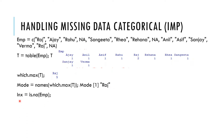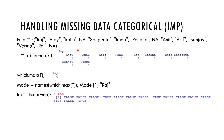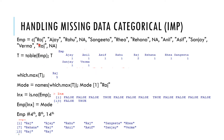We find the indices of missing values using is.na(), which gives TRUE for the three NA positions. Then, using those indices in square brackets, we assign the mode — 'Raj' — to all missing positions. So the 4th, 8th, and 14th indices all get replaced with 'Raj'. This is how we do imputation in categorical variables for missing values.